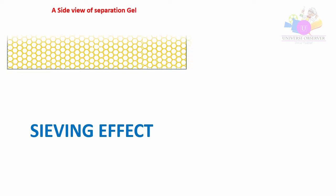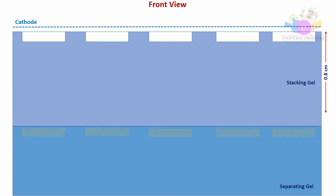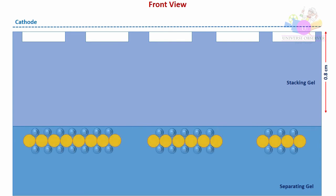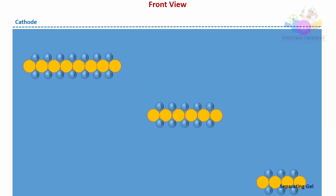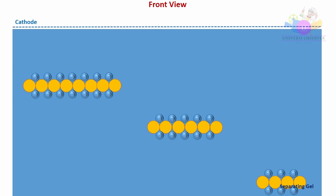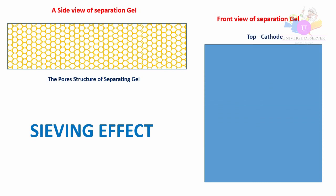The sieving effect of the gel is coming to the scenario. Separating gel contains high concentration of acrylamide, so it has smaller size pores. Small protein molecules can move through these pores very easily, but moving through the small pores is very difficult for large protein molecules. This prevention is done by the frictional resistance due to the sieving effect of the gels.